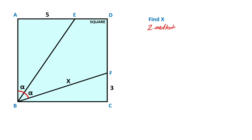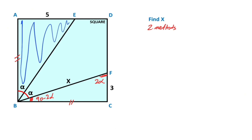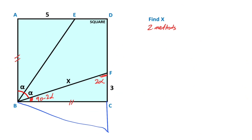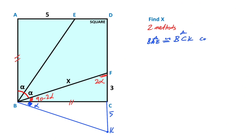Now we will calculate the value of x using the second method. Notice that angle FPC is 90 minus 2-alpha, and here is alpha. We know that these two sides are equal because of the square. If you focus on this triangle and move this triangle to the bottom side of the square like this, here is alpha and this length is 5 units. Let's call this point K. Therefore triangle BAE and triangle BCK are congruent.